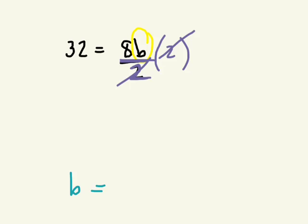So what do I have to do to the left side? You have to multiply it by 2. Good. So we're going to multiply 32 times 2. And what's 32 times 2? So 32 times 2 is 64.